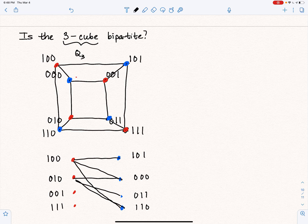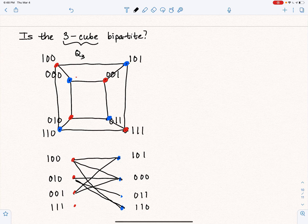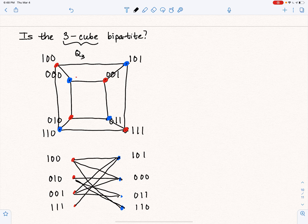In fact, each of the vertices on the left should be adjacent to three vertices on the right and vice versa. So let's see, 0, 0, 1. Adjacent to 1, 0, 1. Adjacent to 0, 0, 0. And adjacent to 0, 1, 1. 1, 1. Adjacent to basically anything with two 1s on the right.